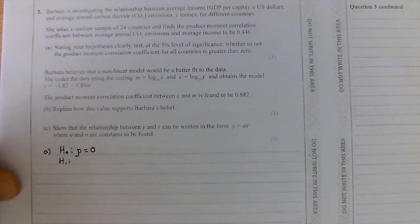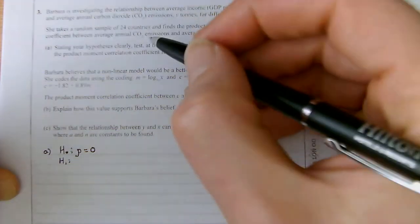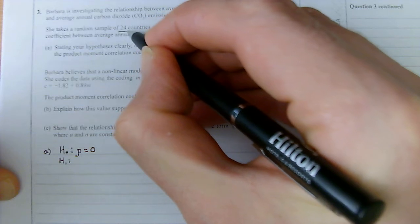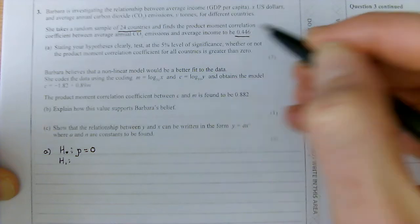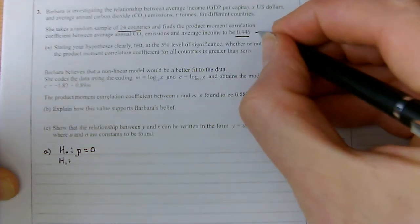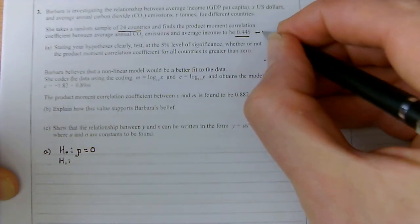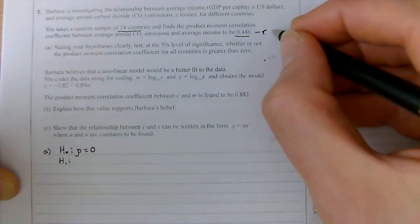We are looking at a question on the correlation coefficient between average income and carbon dioxide emissions for a variety of different countries. The important thing to note is we've got 24 countries. We know that the correlation coefficient for the sample is 0.446. We talk about the sample correlation coefficient as R, and that's for the sample.